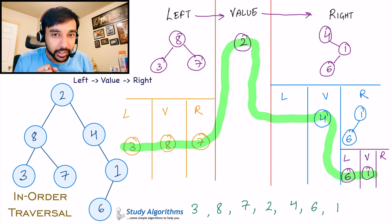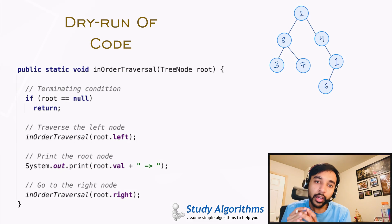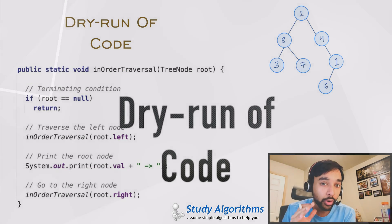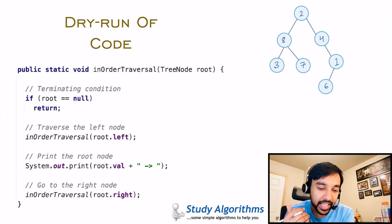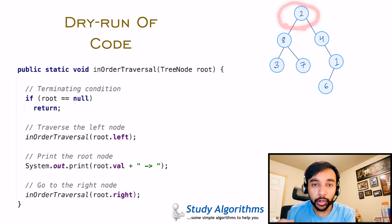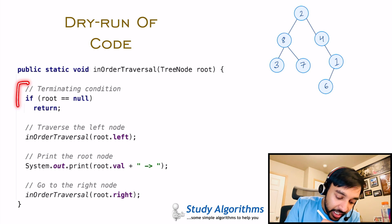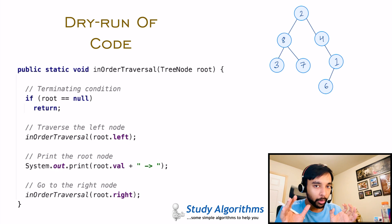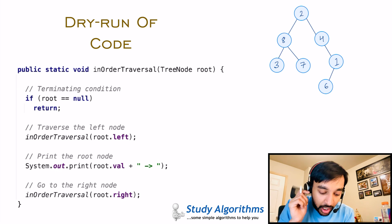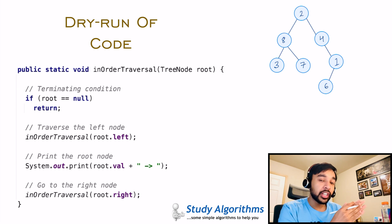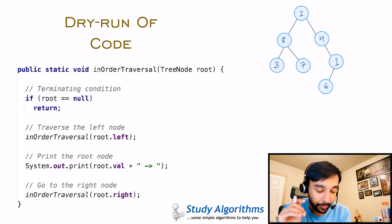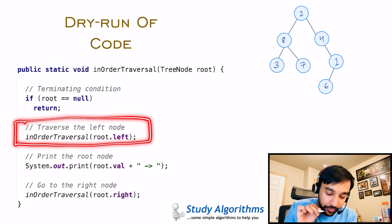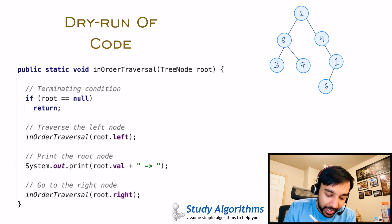Now let us quickly do a dry run of the code so you can see how it actually works. On the left side of your screen you have the actual code to implement in-order traversal, and on the right you will see it through an example. You pass in the root node as a parameter to your function — this root node is the starting point of your binary tree. In a recursive function, we need a terminating condition. As soon as we reach a single node or have no further nodes, we stop — that was the terminating condition.